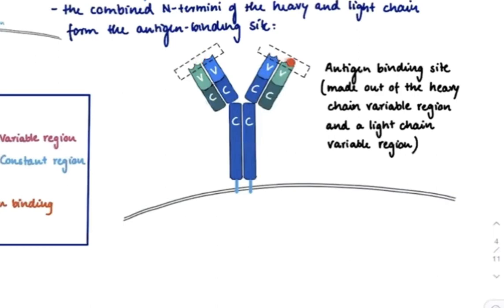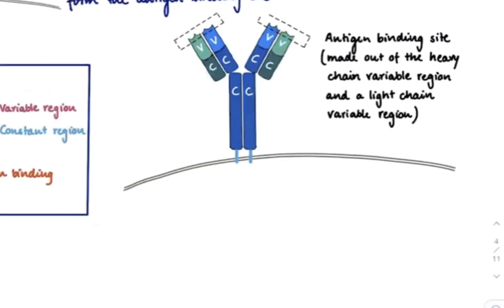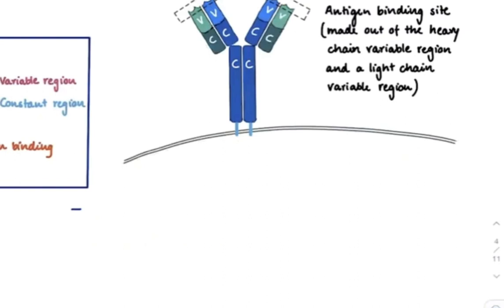And that also makes sense from the wording, because we said the adaptive immune system is a part of the system that can adapt to any possible invader. And so it needs to have a lot of variability and diversity in order to recognize anything. And it recognizes it with its variable region. And also, if you wonder, N-terminus just means the start of the protein and the C-terminus is the end of the protein.